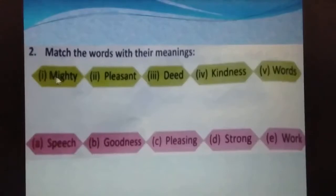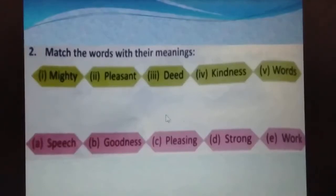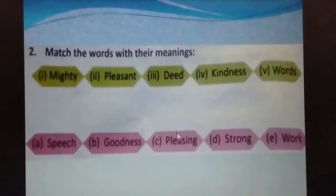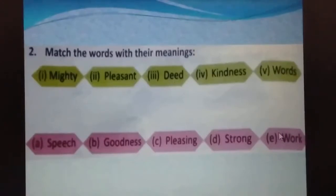First word is 'mighty.' Mighty means very powerful, big, huge, vishal — strong. So we will match mighty with 'strong.' Next one is 'pleasant.' Pleasant means achcha, sundar — something pleasing to the mind. We will match pleasant with 'pleasing.' Third word is 'deed.' Deed means work, action. We will match deed with 'work.'